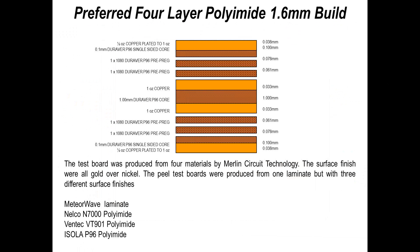For reference, the substrates — this is the build of the substrates I used for my test boards. Some of you may be familiar with it because it's something I use for lots of different exercises within the industry in my practical hands-on training. We used four different laminate materials, all polyimide or polyimide-type construction, specifically for high temperature applications, all produced with Merlin Circuit Technology.